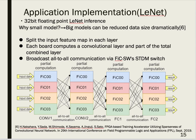I will introduce our implemented applications. We implemented a 32-bit floating-point linear inference phase. The reason for choosing this model size is that large models can dramatically reduce data size in FPGA implementations, so a native 32-bit model is sufficient to some extent. In implementation, the input feature map is spread across each layer. Each board computes a convolutional layer and fully connected layers, and broadcasts via all-to-all communication through the FIC-SW STDM switch.